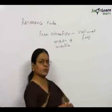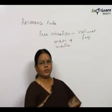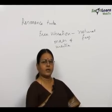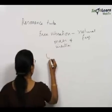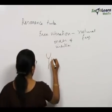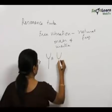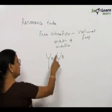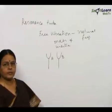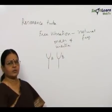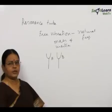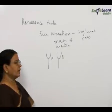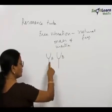Every vibrating body has a natural frequency. We can make another body vibrate by using an already vibrating body. For example, you can have a tuning fork A already vibrating — if you bring it near tuning fork B, B will start vibrating. We are not directly making B vibrate; we excite tuning fork A and bring it near B, or near a stretched wire like a sonometer.